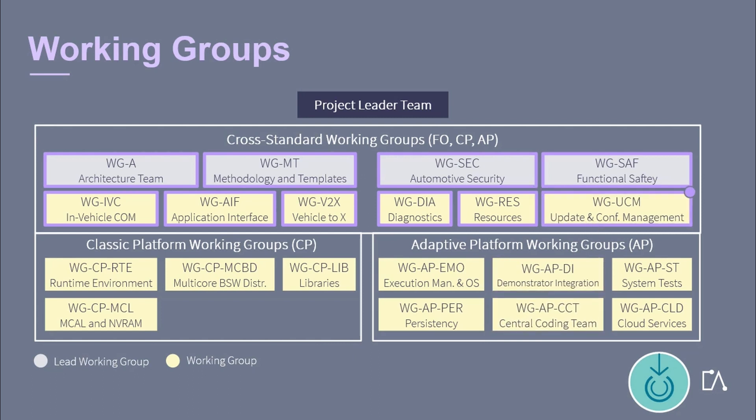The Working Group Update and Configuration Management is an enabler for updates over the air, considering the vehicle infrastructure. This includes a master-subordinate mechanism inside a vehicle EE architecture to be able to update Classic and Adaptive Platform instances, as well as defining a platform-agnostic solution for the software package itself.